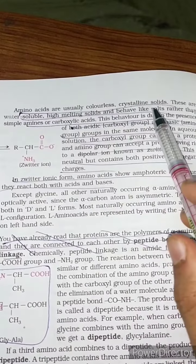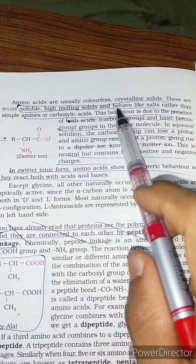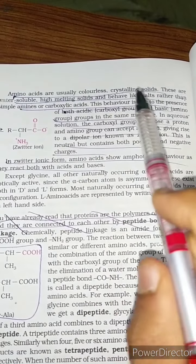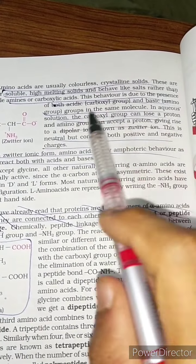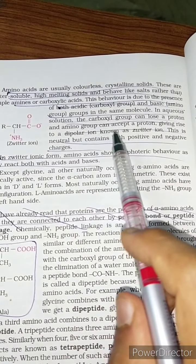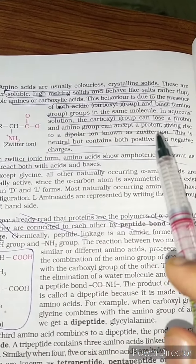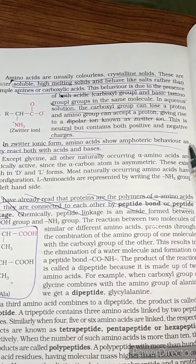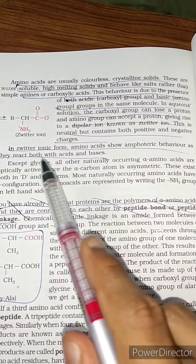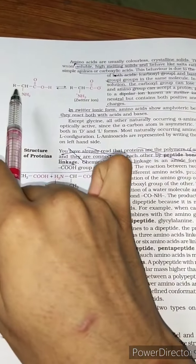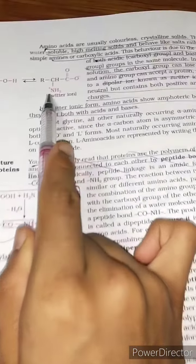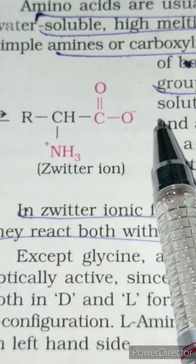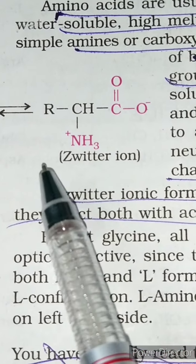Amino acids are usually colorless crystalline solids that are water-soluble, have high melting points, and behave like salts rather than simple amines or carboxylic acids. This behavior is due to the presence of both an acidic carboxyl group and a basic amino group in the same molecule. In aqueous solution the carboxyl group loses a proton and the amino group accepts a proton, giving rise to a dipolar ion called a zwitterion. In zwitterionic form, amino acids show amphoteric behavior, reacting with both acids and bases.